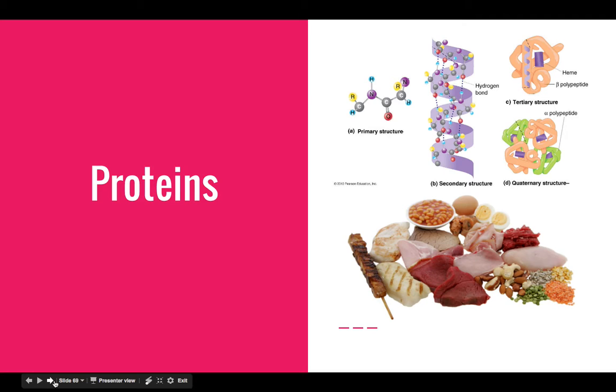So if you're given something that doesn't end in an OSE or doesn't have the word lipid in it, chances are it's a protein. Proteins have lots of functions. They're found in meats and beans and eggs. So that picture over there shows you just a variety of foods that you would find protein in.